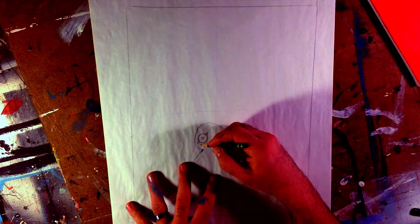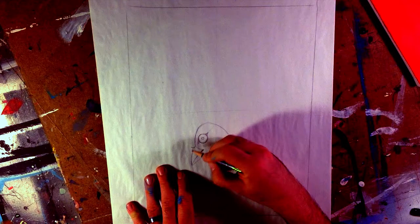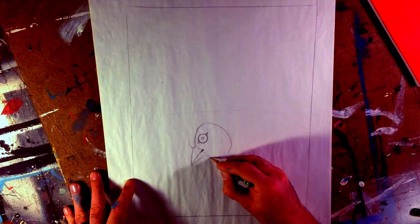Draw a curved line where the beak meets the head. Now we will draw a curve for the neck and body. Extend the curve of the body past the head. To complete the top of the head and the body, we will draw a sort of loose S shape.